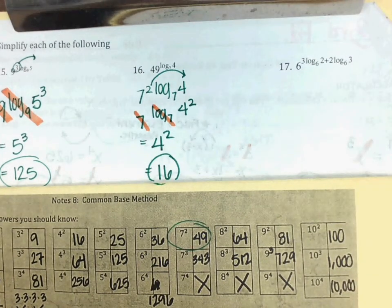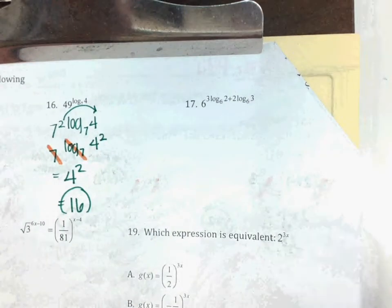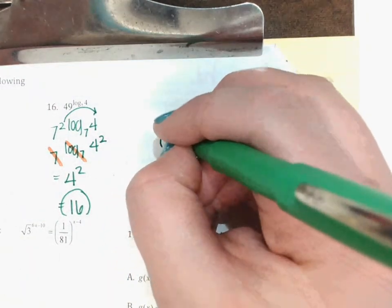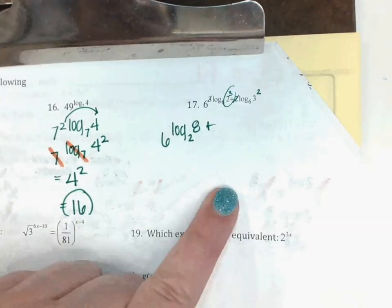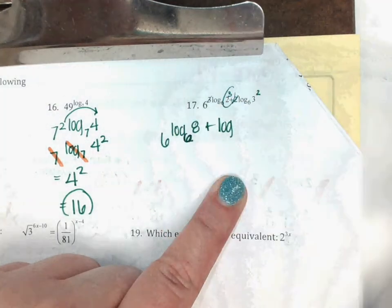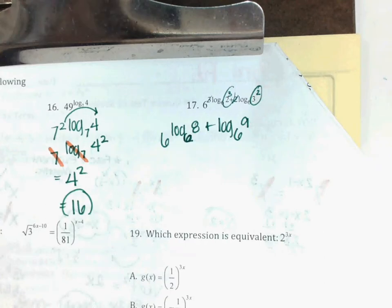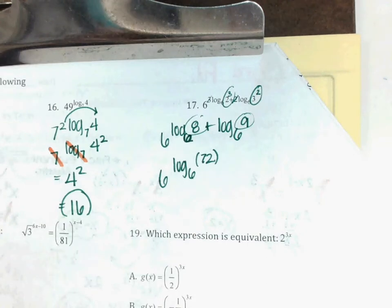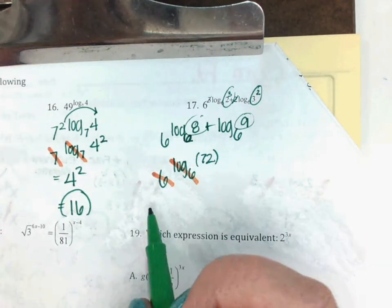Number 17 — my 6s match, I just need to get it into one log so they can cancel. First, move the little exponents up: the 3 here moves up, the 2 here moves up. So I have 6 to the log₆ of 2 to the 3. 2 to the 3 is 8. Plus log₆ of 3 squared, which is 9. When logs are added, I multiply their arguments: 8 times 9 is 72. Once I get it down to one log with a 6, I cancel out the 6 log₆ — what's left is 72.